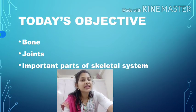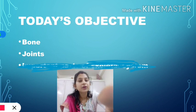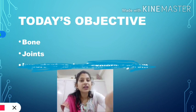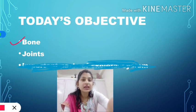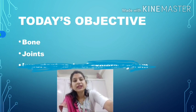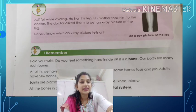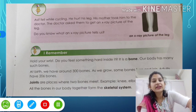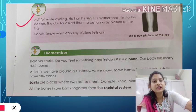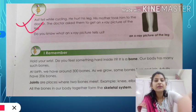So what are the things we are going to learn in today's class? What are the objectives here? We are going to learn about bones, and then we will learn about what are joints. Let's move ahead and see — a small incident is mentioned in your book on page number 15.